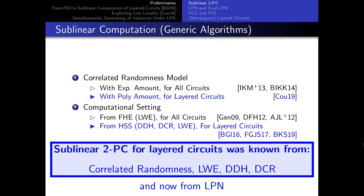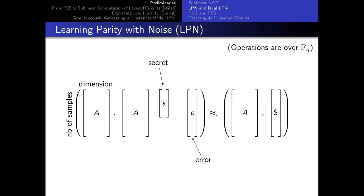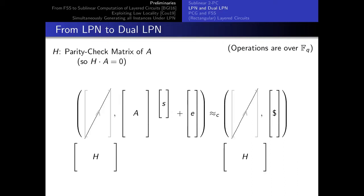What is the LPN assumption? I'm sure most of you are familiar with this formulation of the learning parity with noise assumption. It's parameterized by three values: the dimensions of matrix A, as well as the density of the noise vector. For our purposes, it's more convenient to consider the dual form of LPN, which is essentially equivalent. I can always give you, instead of the matrix, its parity check matrix — that's roughly equivalent.